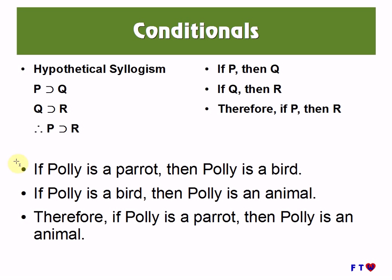Now we move on to hypothetical syllogism, which goes: if P then Q; if Q then R; therefore, if P then R. For example: 'If Polly is a parrot, then Polly is a bird. If Polly is a bird, then Polly is an animal. Therefore, if Polly is a parrot, then Polly is an animal.' This rule of inference illustrates the transitive property of the conditional. You can have any number of conditionals, and if each is linked to the previous one — where the antecedent of one is the consequent of the previous one — then you can infer a conditional whose antecedent is the antecedent of the first conditional and whose consequent is the consequent of the last conditional, yielding a valid argument.